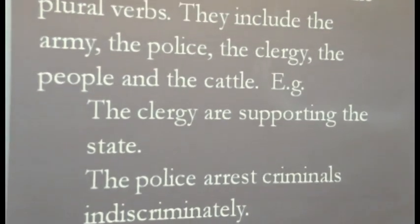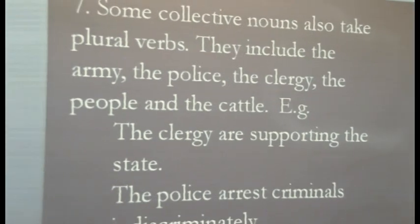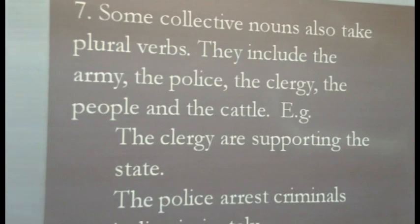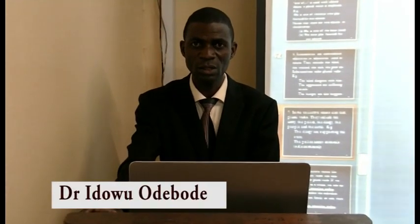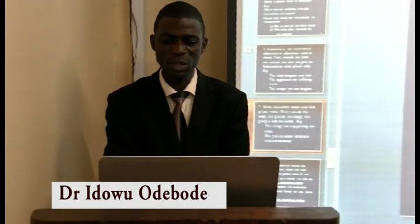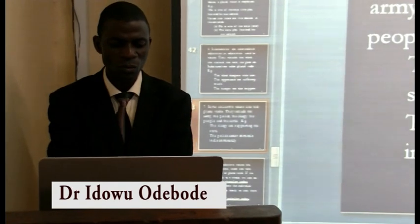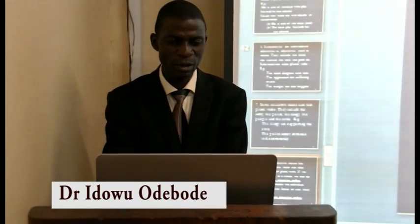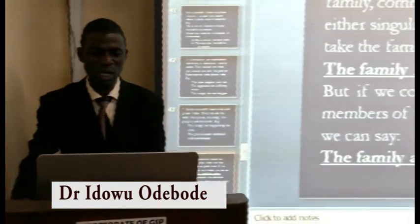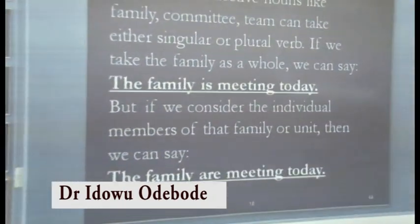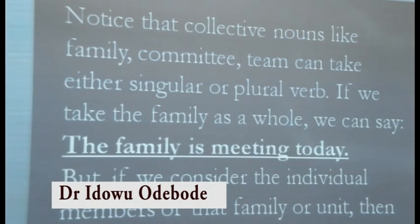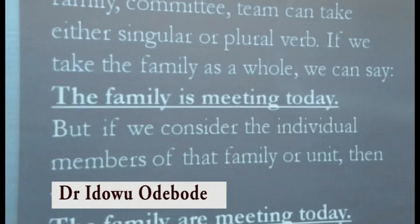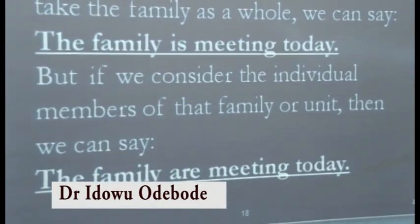Rule 7: Some collective nouns also take plural verbs. They include 'the army', 'the police', 'the clergy', 'the people', and 'the cattle'. Example: 'The clergy are supporting the state.' 'The police arrest criminals indiscriminately.' Collective nouns like 'family', 'committee', and 'team' can take either singular or plural verbs. If we take the family as a whole, we say 'The family is meeting today.' But if we consider individual members, we say 'The family are meeting today.'